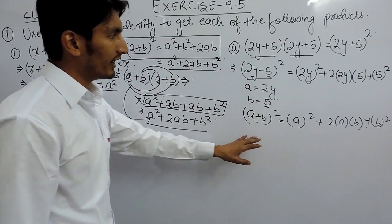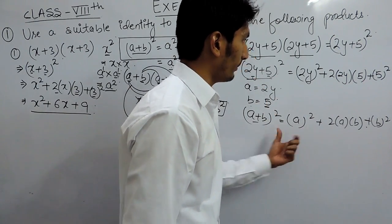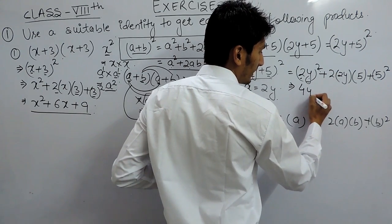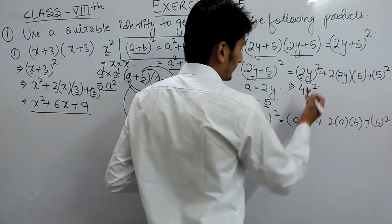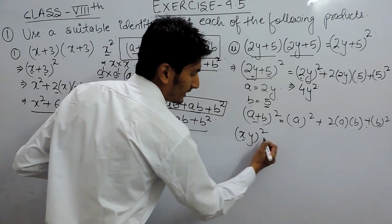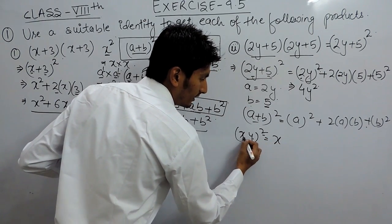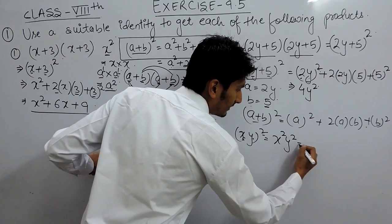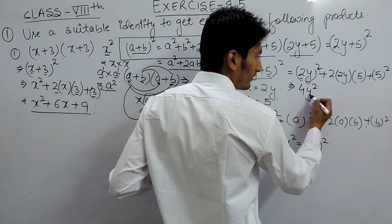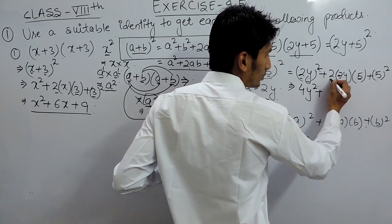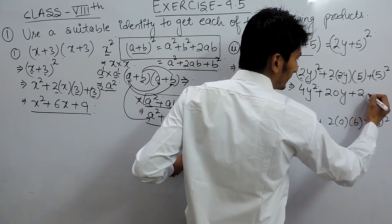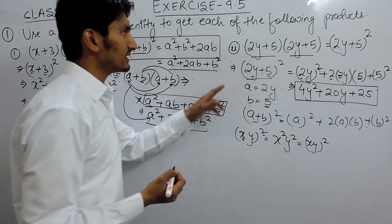We can now simply solve this. (2y) square means 2 squared times y squared, which is 4y square. We have already discussed that when a product is squared, the square applies to both variables. Then 2 times 2 is 4, times 5 is 20, giving 20y. And 5 square is 25. So the answer for the second part is 4y square plus 20y plus 25.